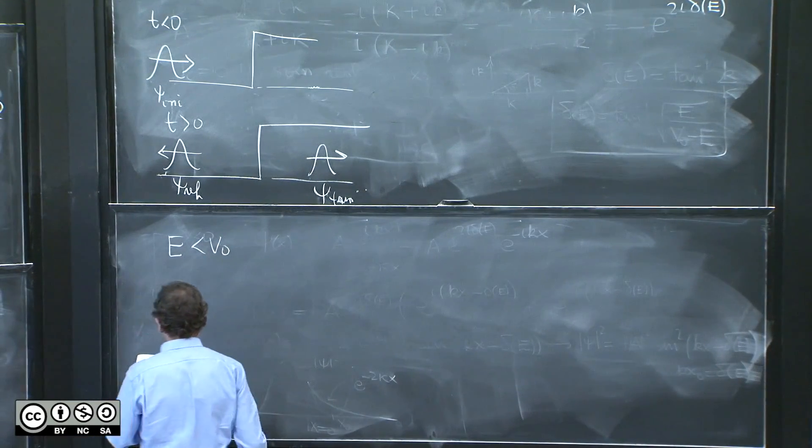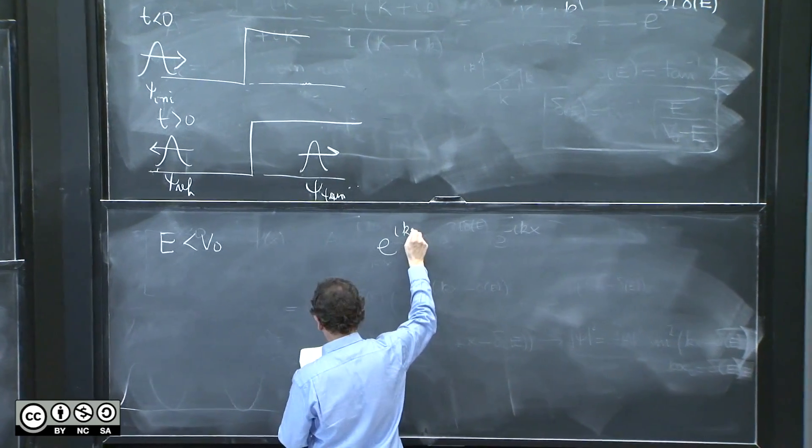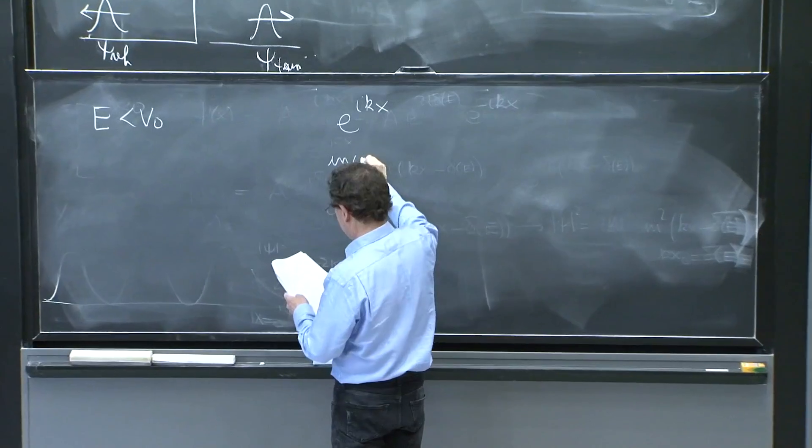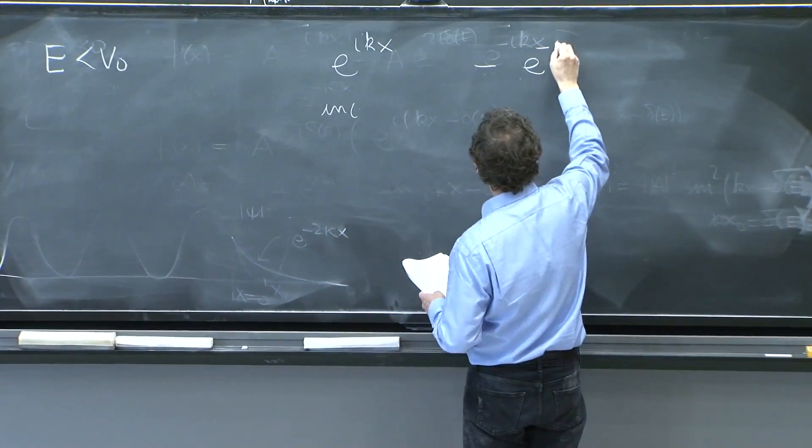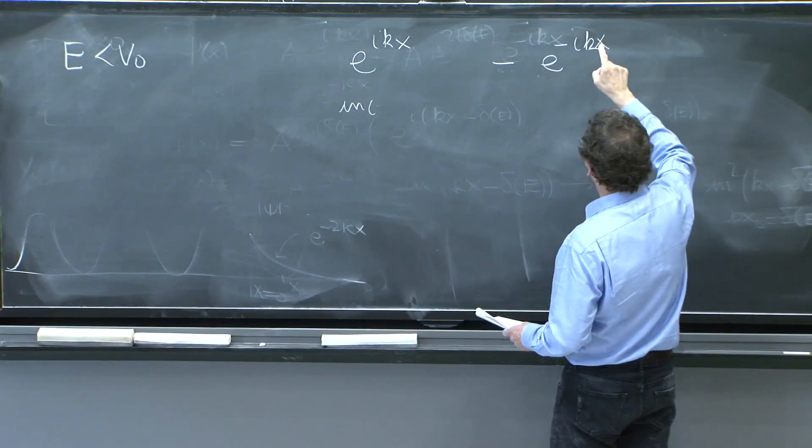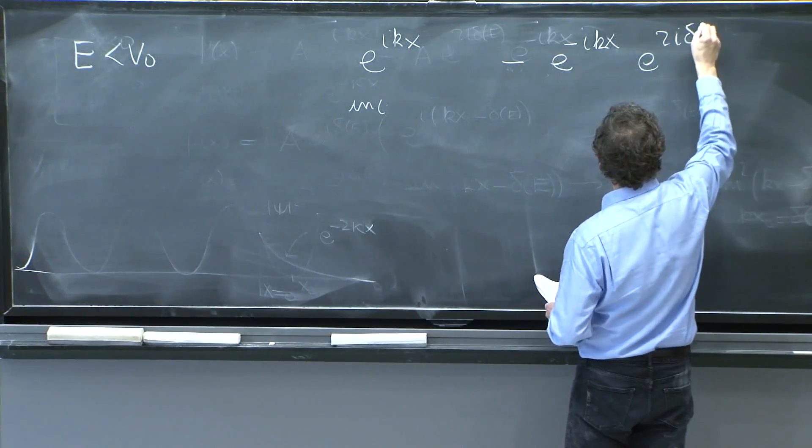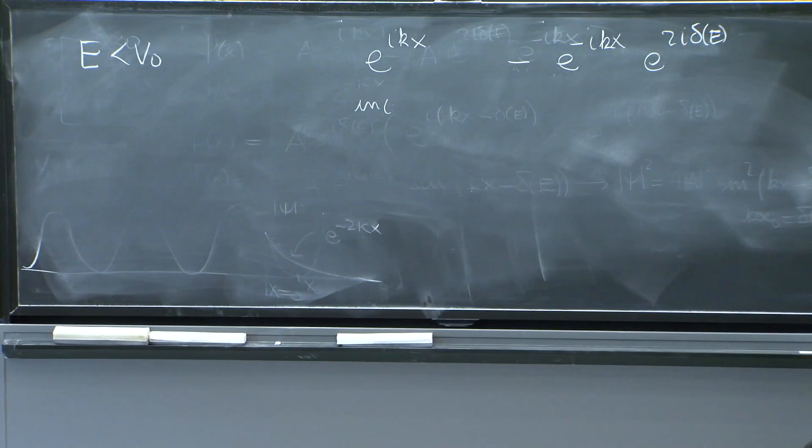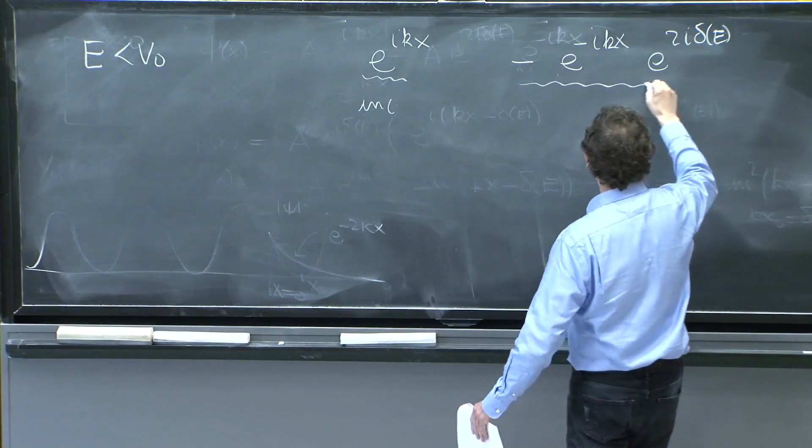E less than V0. So you have an incident wave, e to the ikx incident, and a reflected wave that you have e to the minus ikx, remember, minus the other phase, and e to the 2i delta of e. So this is the incident wave, and this is the reflected wave.